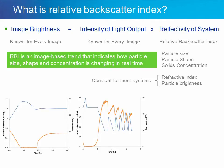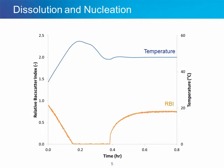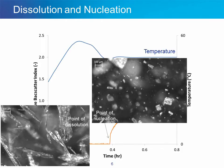Here we have some examples we will go into more detail on. In the first example, we follow a crystallization process where temperature is increased and RBI decreases over time, indicating dissolution of the crystals. As the temperature is reduced, the crystals nucleate. We have the point of dissolution measured by RBI as well as the point of nucleation measured by RBI. Combined with the RBI trend, we have images showing that the size, shape, and structure of the crystals differs at the point of dissolution compared to the point of nucleation.